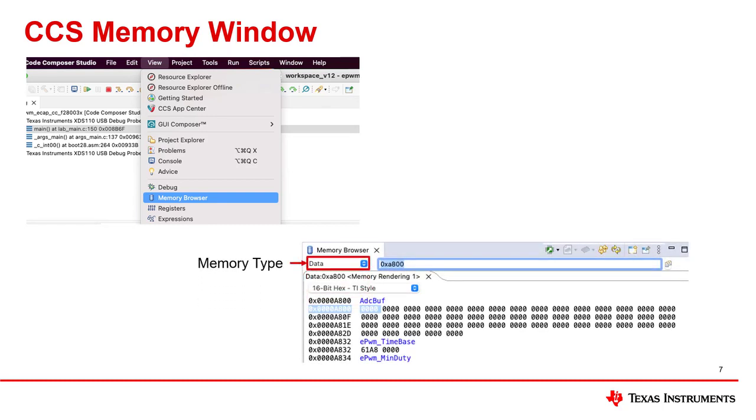The drop down to the left of the address allows you to choose whether data, program, IO, or peripheral memory is being selected. The text box to the right of this is the address which is being read, which must be in hexadecimal with the preceding 0x. Once an address has been entered, a drop down option for the data format of the memory appears. The data format displayed can be changed to various formats such as hex, integer, character, floating point, and so on.